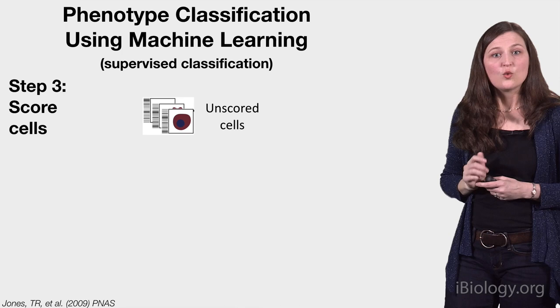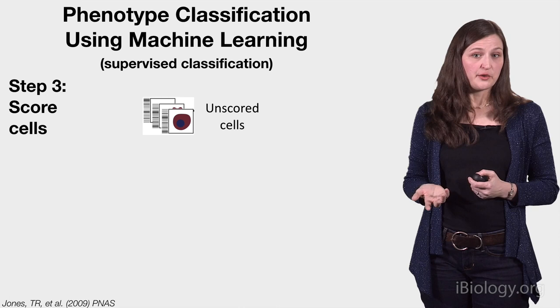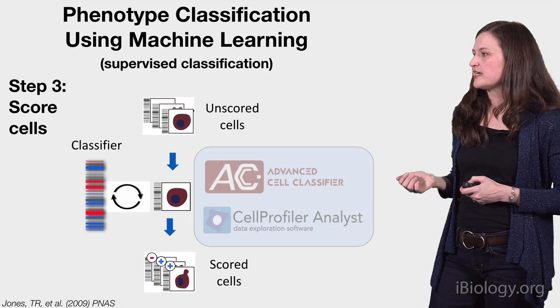Once the accuracy of the classifier is sufficient, all the cells in the experiment can be classified automatically and very quickly by running them past the classifier to obtain a score. There are two user-friendly tools shown here that let you use this process, and we're also working on a new web-based tool powered by deep learning — check the website to see if it's ready for use.